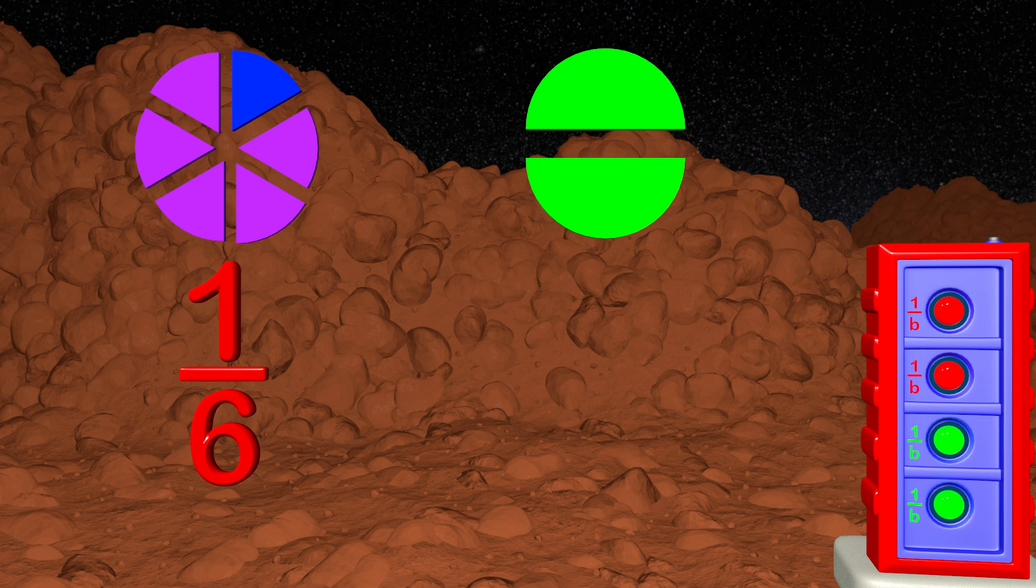Now let's look at the circle on the right. What is the fraction for just one piece of this circle? The fraction is 1 over 2, also called 1 half. The part we need is 1 half of the entire circle.